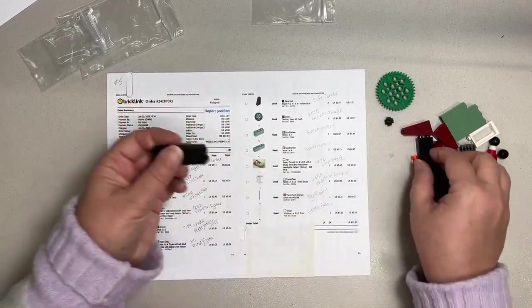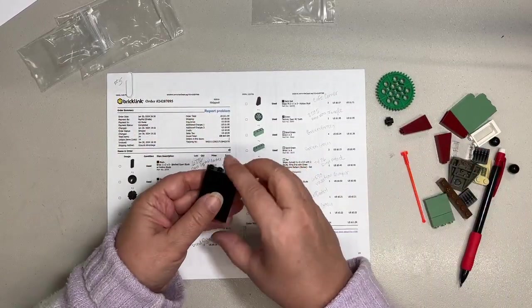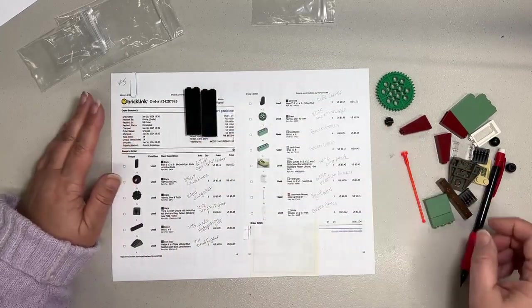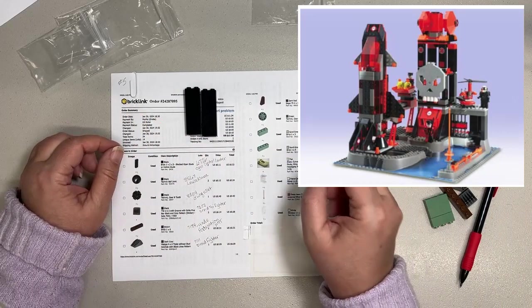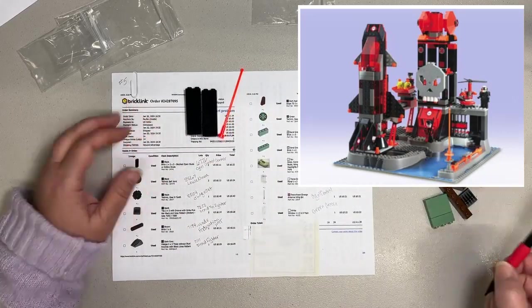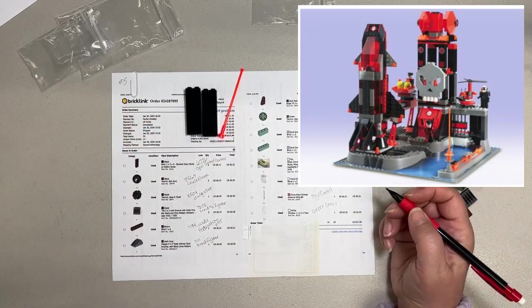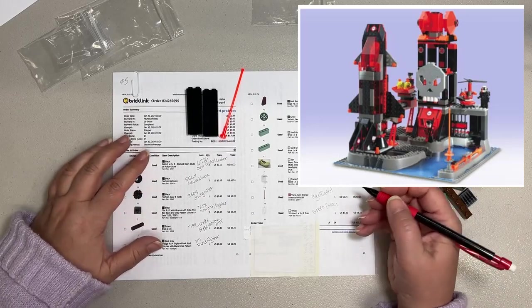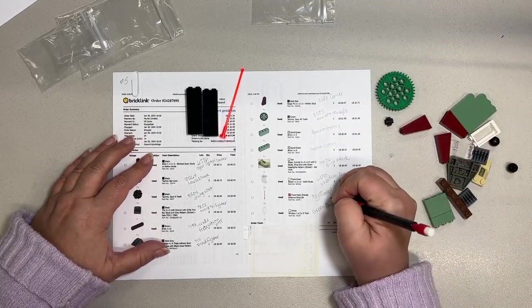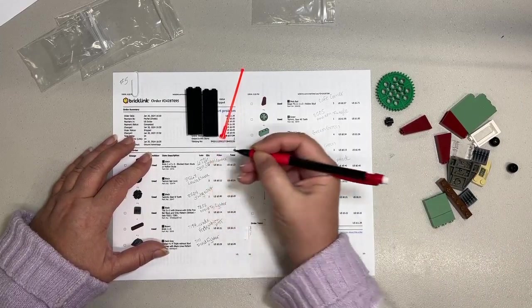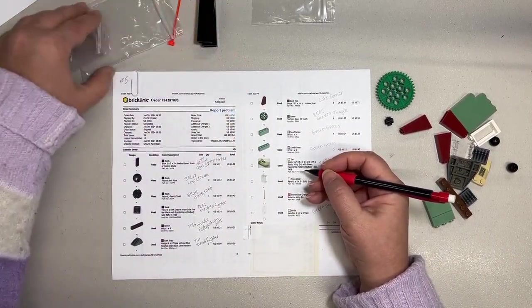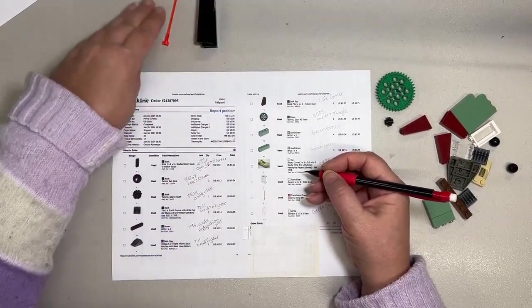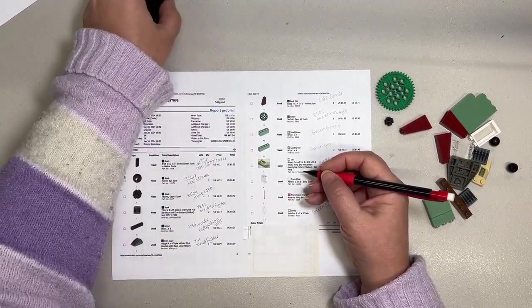So the first thing are the two black bricks and also this antenna whip. Those are going to go for the Ogle Control Center, which is part of the Alpha Team series. So I had one of those and two of those. That's another one that we needed quite a few parts for, so we're slowly collecting parts for that.